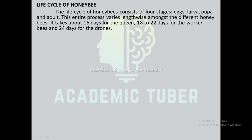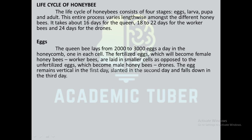The life cycle of the honey bee consists of four distinct stages: egg, larva, pupa, and adult. This entire process varies in length among the different honey bees. It takes about 16 days for the queen bee, 18 to 22 days for the worker bee, and 24 days for the drones.